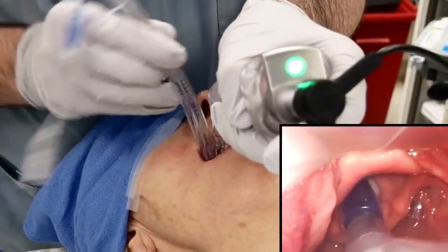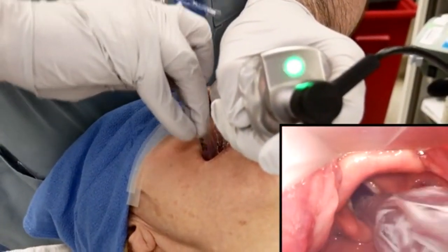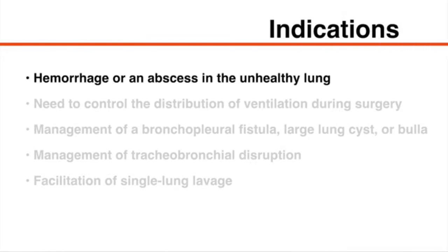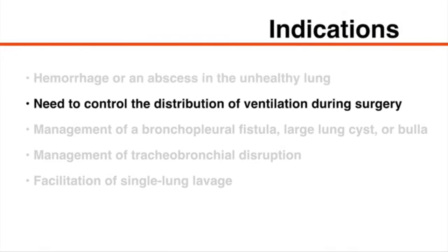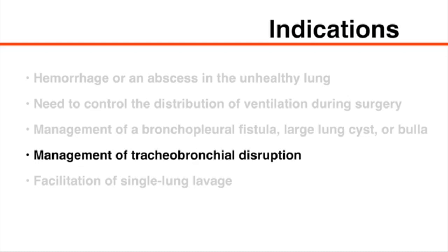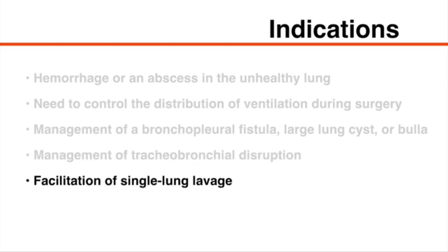Placement of a double lumen endotracheal tube is indicated for prevention of damage or contamination in a healthy lung. Possible causes of such damage or contamination include hemorrhage or an abscess in the unhealthy lung. Other indications include the need to control the distribution of ventilation during surgery, management of a bronchopleural fistula, large lung cyst or bulla, management of tracheobronchial disruption, and facilitation of single lung lavage, which may be required in patients with pulmonary alveolar proteinosis.